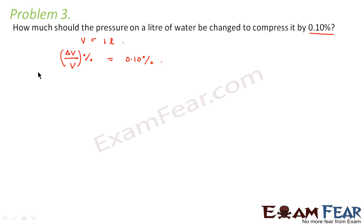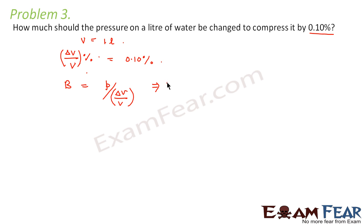This is just the reverse of what we did in the previous question. From the formula for bulk modulus — bulk modulus equals stress (that is pressure) divided by delta V by V (the volumetric strain) — we can calculate P. So P is equal to the bulk modulus B multiplied by the volumetric strain delta V by V. The bulk modulus for water is 2.2 × 10⁹ Newton per meter square.